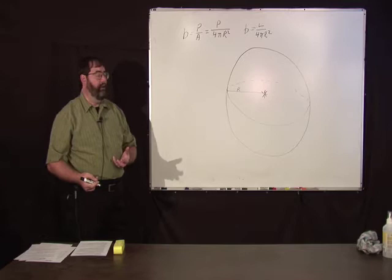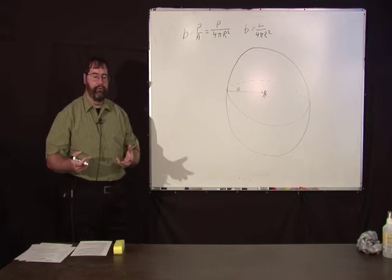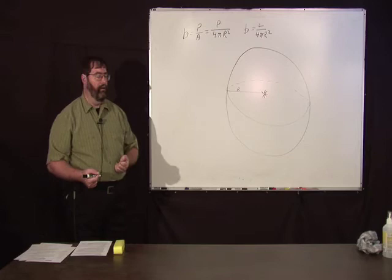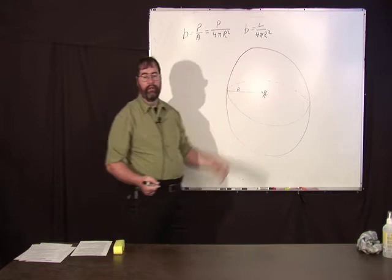It turns out there's a class of star called Cepheid variables that are variable stars whose luminosity can be determined from its period. Basically, from this equation, then, you can use that to measure the distance to that star.